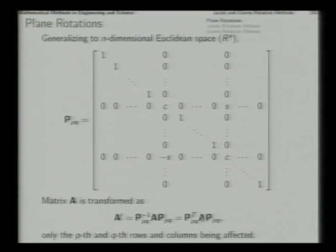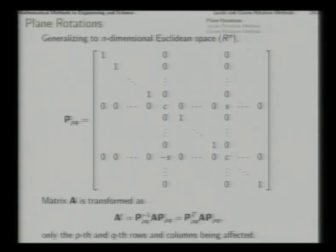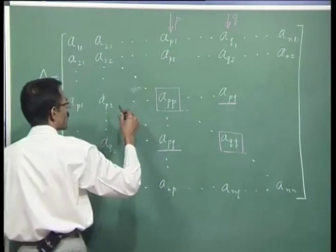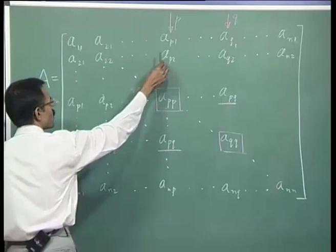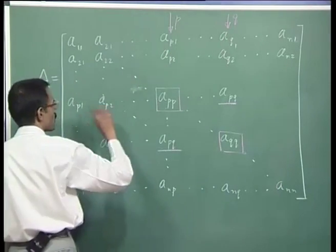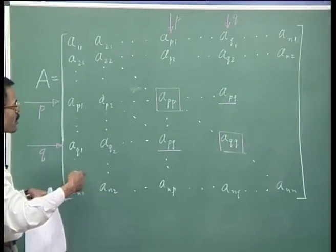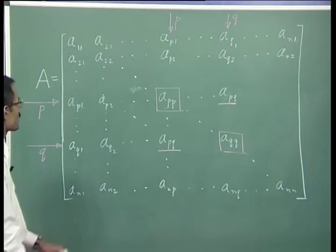Now consider this matrix A which is symmetric. Out of symmetry we represent A-p1 the same as A-1p — because of symmetry we can represent it as A-p1 itself. From now onwards we will be discussing mostly symmetric matrices.